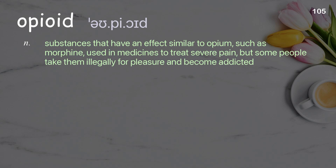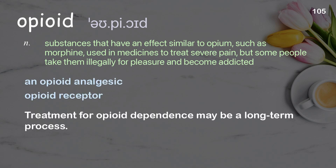Opioid: substances that have an effect similar to opium, such as morphine, used in medicines to treat severe pain; but some people take them illegally, for pleasure, and become addicted. Examples: an opioid analgesic, opioid receptor. Treatment for opioid dependence may be a long-term process.